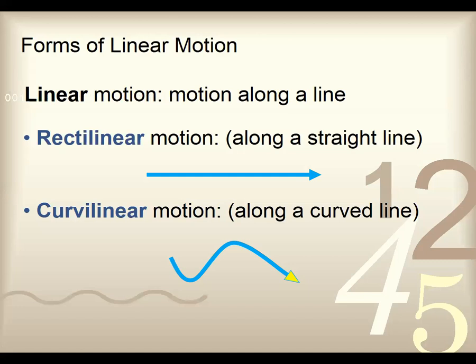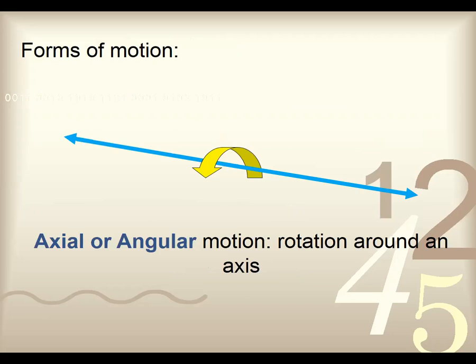We have linear motions or linear movement. Linear motion is motion along a line. Rectilinear motion is a straight line — you think about running a hundred-yard dash or something. Curvilinear — you think more about a running back running around tackles and so forth.